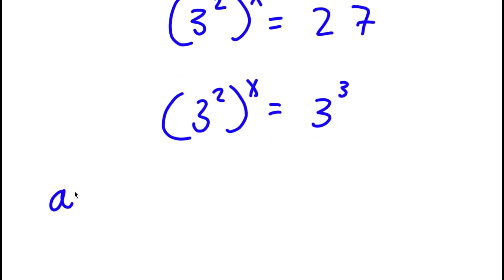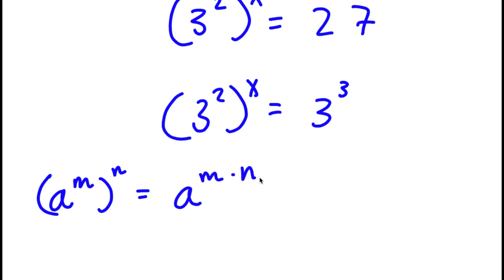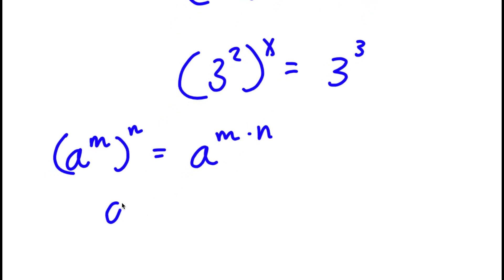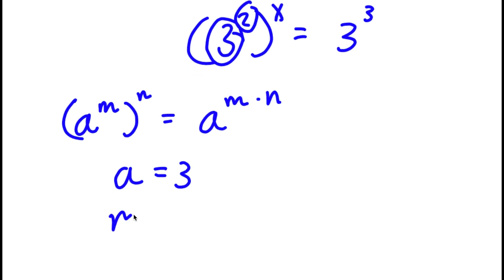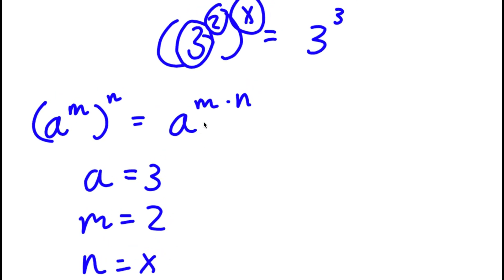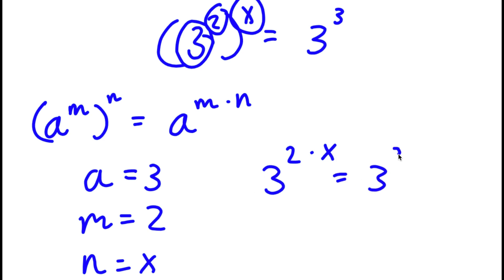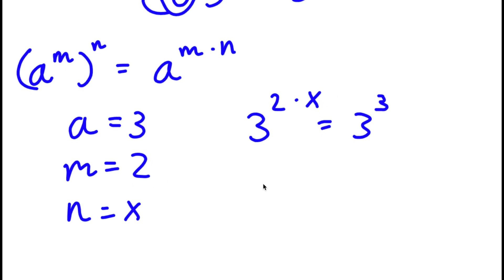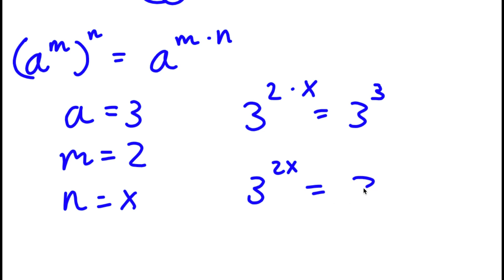Now using the rule a to the power of m to the power of n equals a to the power of m times n: the base a is 3, m is 2, and n is x. So 3 to the power of 2 to the power of x becomes 3 to the power of 2 times x, which equals 3 to the power of 2x. So now I have 3 to the power of 2x equals 3 to the power of 3.